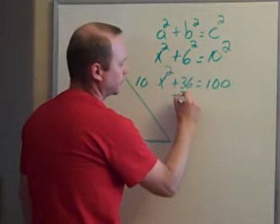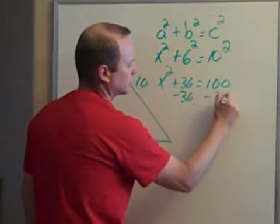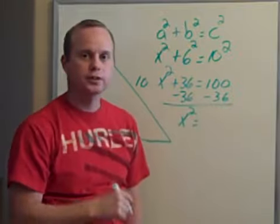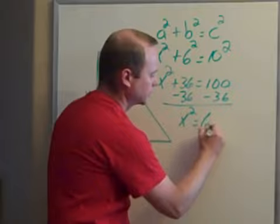Alright, so now what I'm going to do is subtract 36 from both sides. I've got x squared equals 100 minus 36 gives me 64.